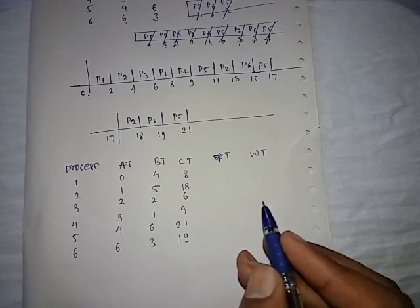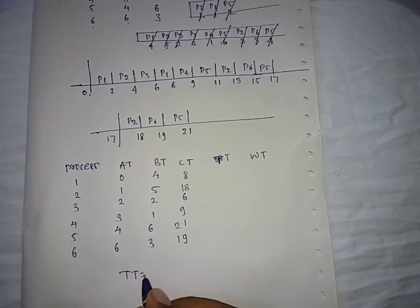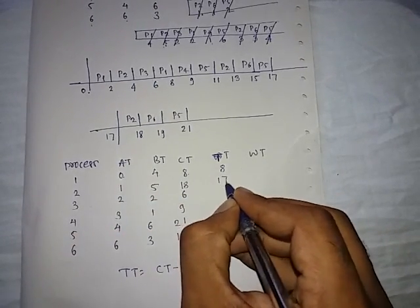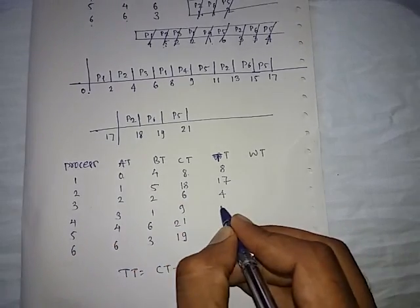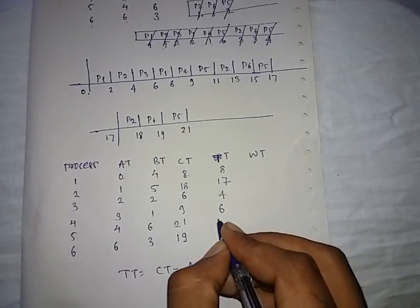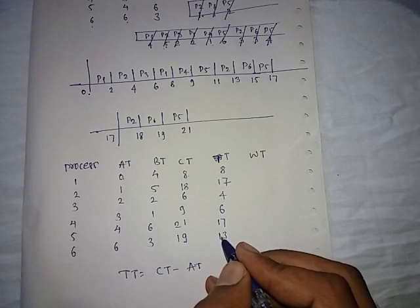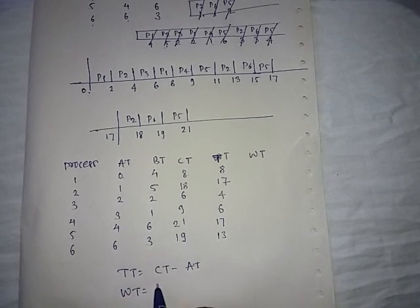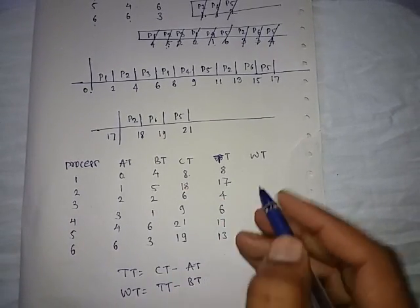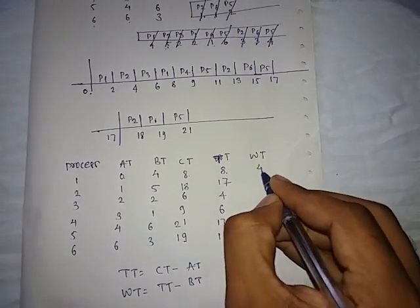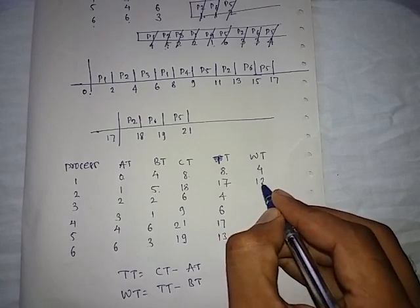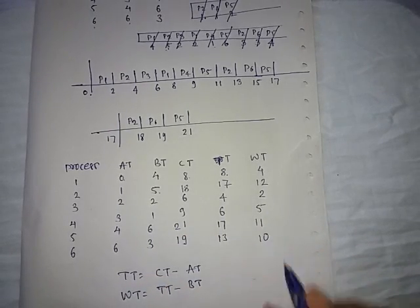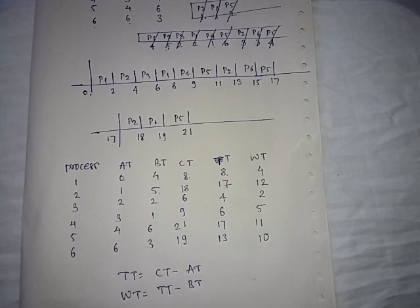Turnaround time formula is: turnaround time equals completion time minus arrival time. So completion time minus arrival time is 8 minus 0 equals 8, 18 minus 1 equals 17, 6 minus 2 equals 4, 9 minus 3 equals 6, 21 minus 4 equals 17, and 19 minus 6 equals 13. Waiting time equals turnaround time minus burst time. 8 minus 4 is 4, 17 minus 5 is 12, 4 minus 2 is 2, 6 minus 1 is 5, 17 minus 6 is 11, and 13 minus 3 is 10.